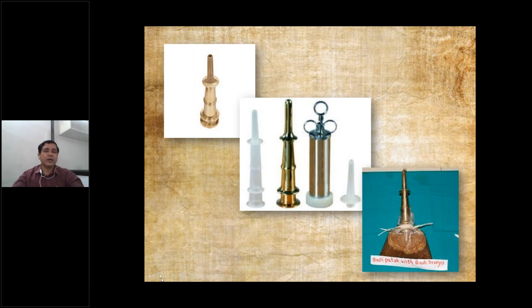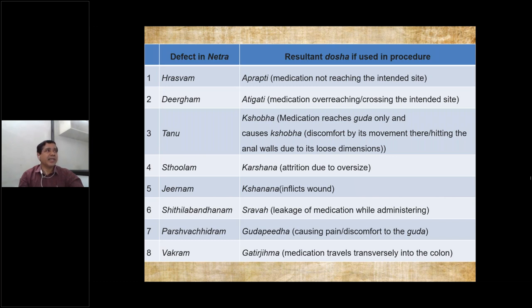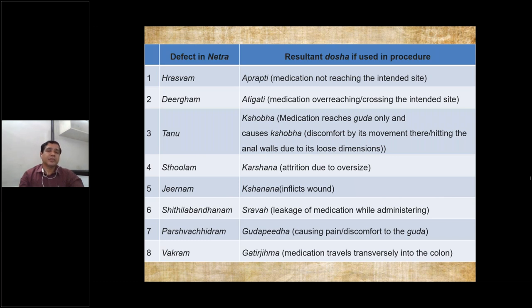Clearly, which kind of defect creates which kind of complication is discussed in this table. If Rasvam — too small — then Aprapti results, meaning the medication or Bastidravya will not reach the intended site, that is the rectum and colon; it will be just in the anal canal and passed immediately, so there will be no use of the Basti procedure. Second, Dirgham — a long one — will create the complication Atigati, that means medication overreaching or crossing the intended site. Next is Tanu, which will create Kshobha — too thin means the medication reaches Buddha only and causes discomfort by its movement, or sometimes hits the anal walls due to loose dimensions.